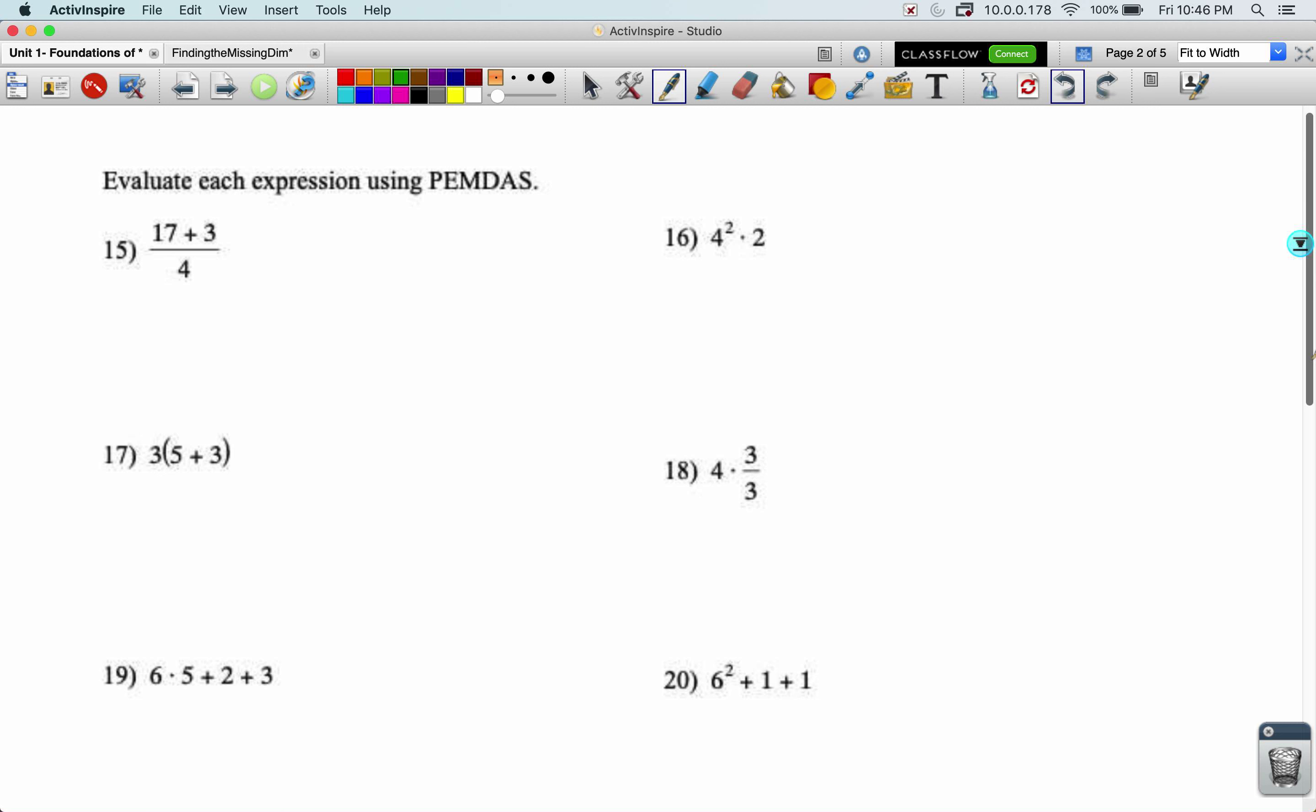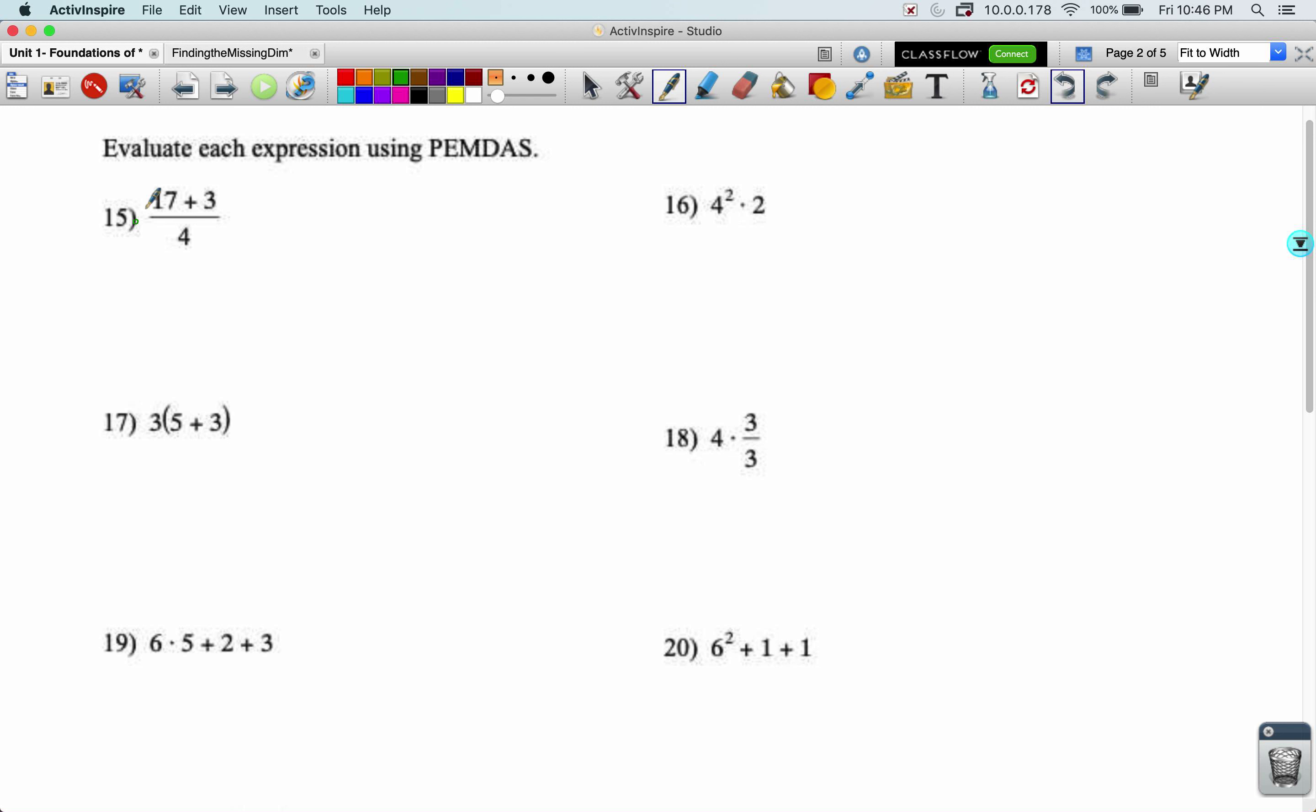Evaluating using PEMDAS. Start with 15. So when I have a big fraction line, I need to simplify the top and the bottom before doing the division. So I can add in these hidden parentheses that are around the top. 17 plus three is a 20. The four stays in the bottom. 20 divided by four is a five.